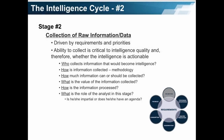Collection of raw information and data. This stage is driven by the requirements and the priorities. The ability to collect is critical to intelligence quality and therefore whether the intelligence is actionable. Who collects information that will become intelligence? How is information collected? What is the methodology? How much information can or should be collected? When does the collector and the analyst need to stop? What is the value of the information collected? How is the information processed? What is the role of the analyst in this stage? Is the analyst impartial, or does he or she have an agenda? It is very critical to know exactly whether impartiality or bias exist in this process.